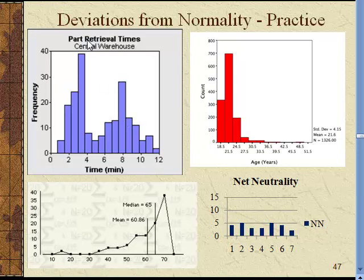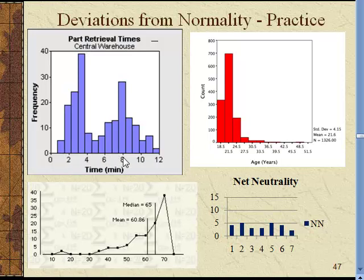Here are some examples of deviations from normality to practice with. The first shows data from a central warehouse on how long it takes to retrieve certain parts. The bimodal shape suggests two fundamental distributions — some parts retrieved quickly, others taking longer, perhaps stored in different warehouses. When two distributions get blended together, that's when it looks bimodal.